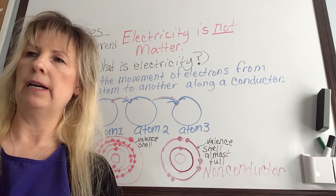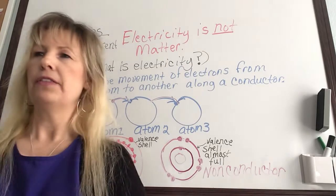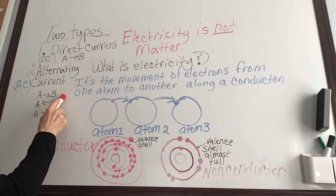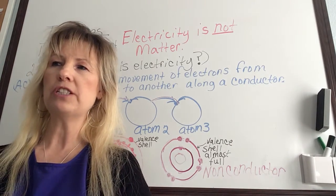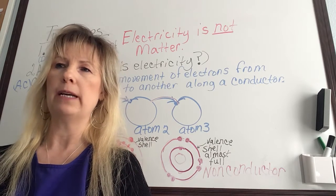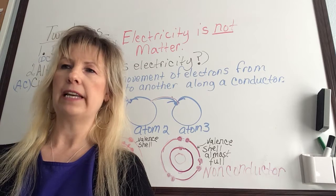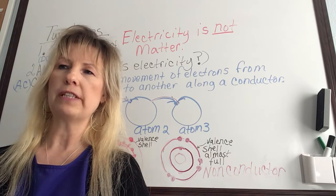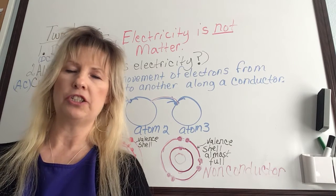Alternating current, abbreviated AC, has current that flows one direction and then comes back the other way. It goes from A to B, B to A, and then A to B again — the flow goes back and forth, changing direction 60 times a second. Corded hair dryers, curling irons, electric files, and table lamps that plug into the outlet all use alternating current. A rectifier is an apparatus that changes alternating current into direct current. Cordless electric clippers and phone chargers use a rectifier to change the alternating current from your electrical outlet to DC needed to charge their batteries.